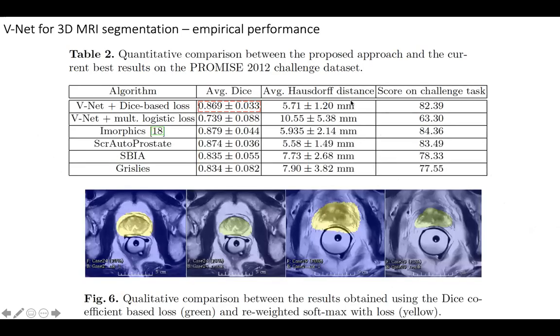About the performance, as we just mentioned, the average dice score of this approach on the PROMISE 2012 dataset is about 0.87 dice score. The qualitative result is shown here.